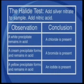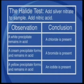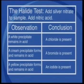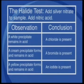We can use these tests together with the halide tests to identify anions in solution. Let's make a final summary of all the anion tests by looking at these simple tables. For the halide test: we add silver nitrate to the sample and then we add nitric acid. If we observe a white precipitate which remains in acid, a chloride is present. If a cream precipitate forms and remains in acid, a bromide is present. And if a yellow precipitate forms and remains in acid, then an iodide is present.